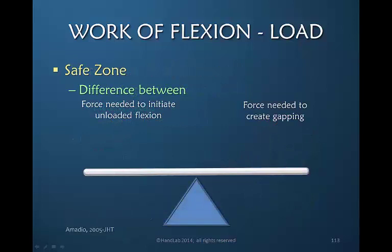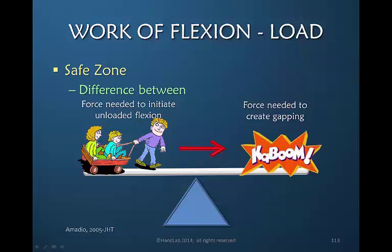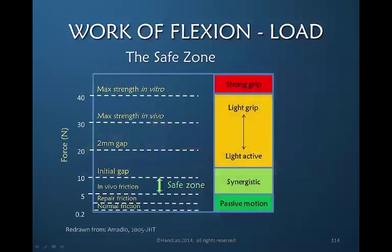Amadio introduced the term 'safe zone.' This zone is the difference between the amount of force needed to move a tendon — because we must have some power to get the tendon to move — and the amount of force that either creates gapping or rupture. There is a balance between enough force and too much force. Amadio illustrated the safe zone as being that position between the repair friction and the initial gapping.